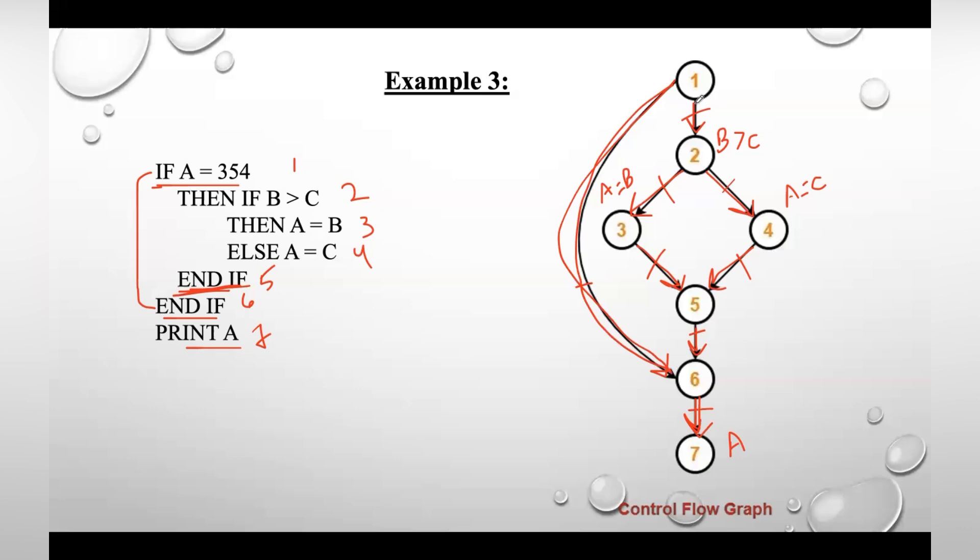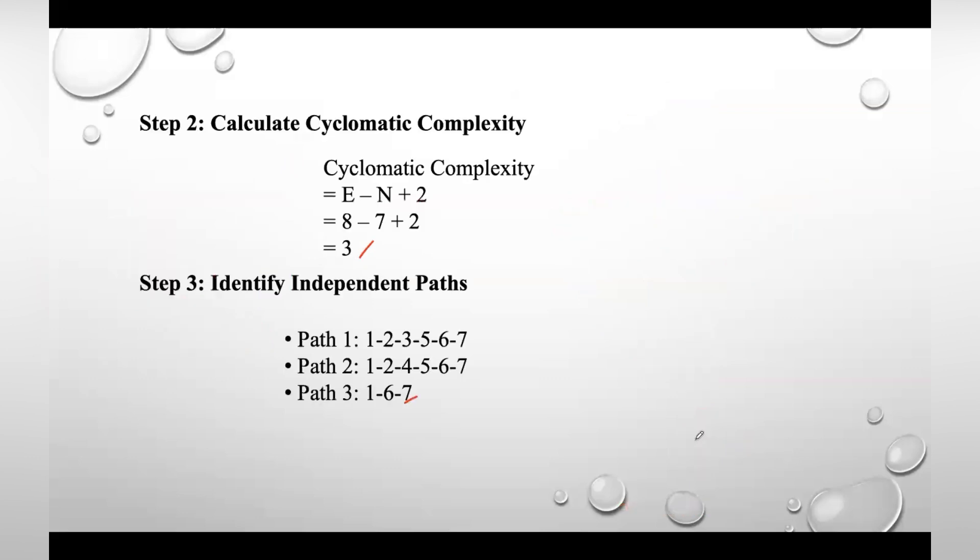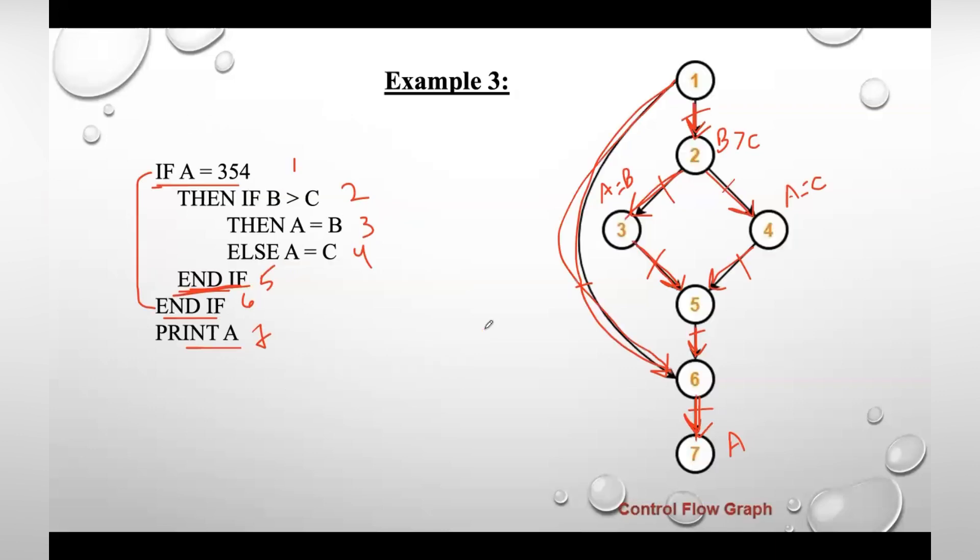The other path is one to two and move towards this left side: two to three, three to five, five to six and six to seven. The left over path is towards the right side of this graph: one to two, two to four, four to five, five to six and six to seven.